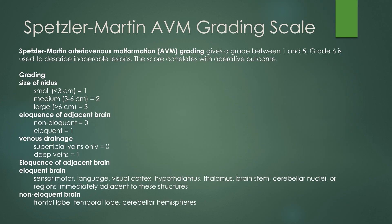The Spetzler-Martin AVM grading scale gives a grade between 1 and 5. Grade 6 is used to describe inoperable lesions, and this score correlates with operative outcome. First you grade the size of the nidus — you measure it in all three dimensions. It gets one point if it's less than 3 centimeters, 2 points for 3 to 6 centimeters, and 3 points if it's greater than 6 centimeters.